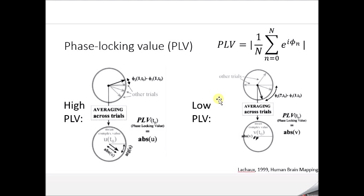A way to estimate this is using the phase locking value (PLV). We have N trials, and for a given time point — say 100 ms after the event — we calculate the phase at that time point for every trial, then sum the complex exponentials of these phase values, and take the magnitude of the average of that sum.